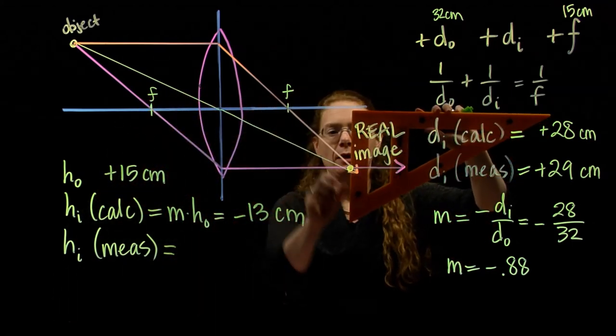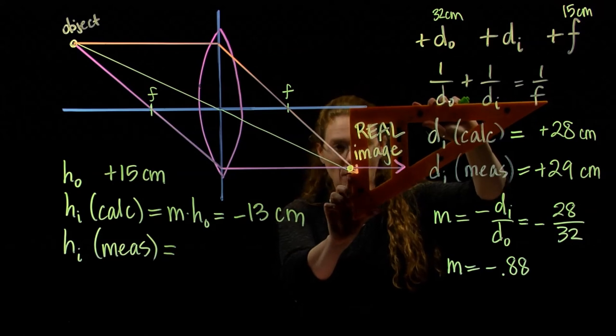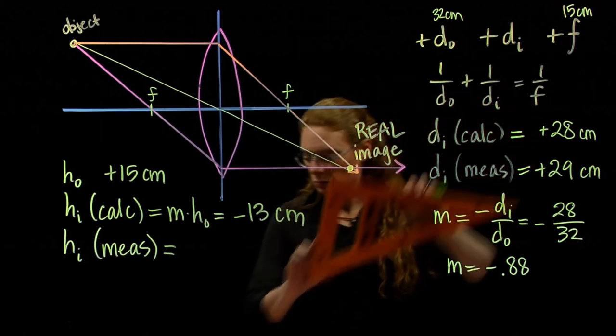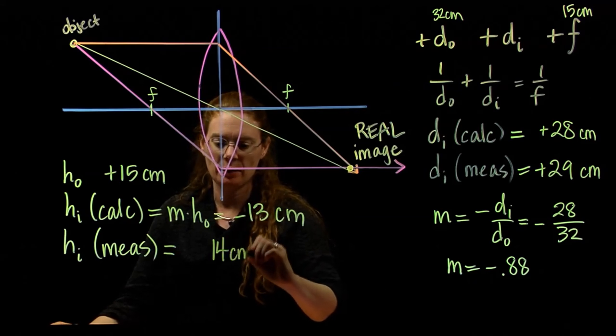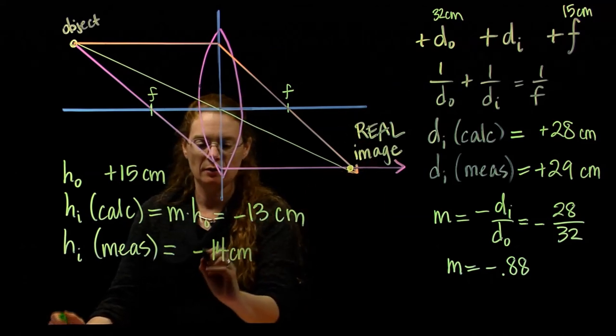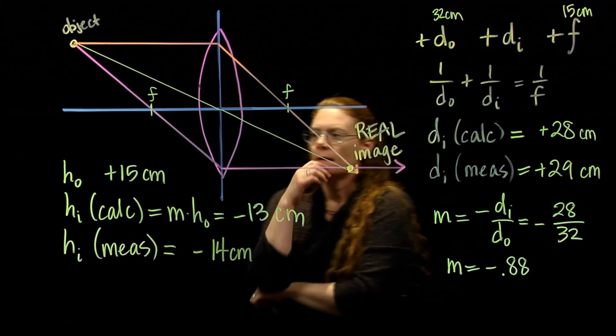Let's measure it and see how we did. So the measurement from the axis to the image, I get 14. So I have measured at 14 centimeters. It's below the axis, so it's negative.